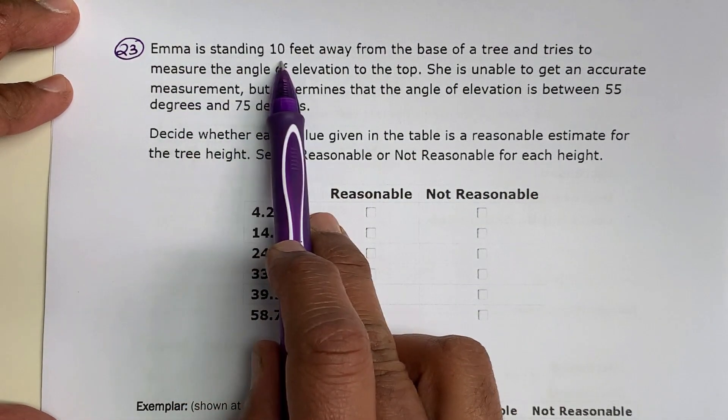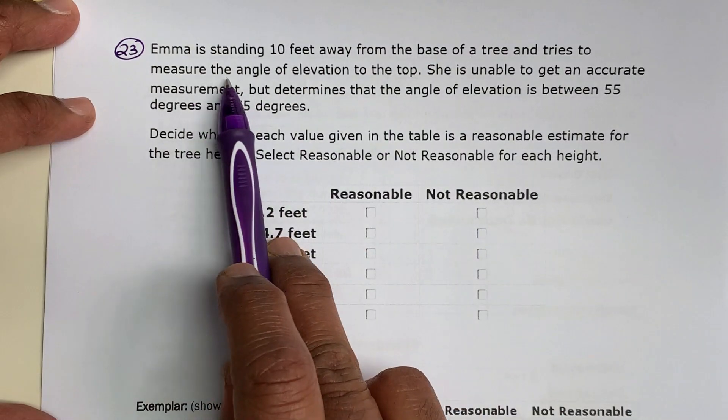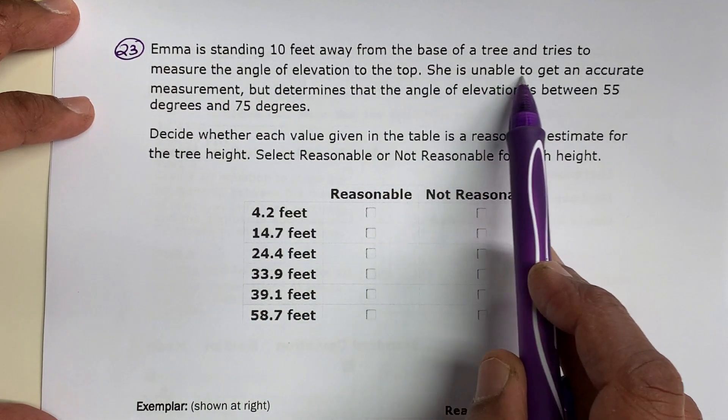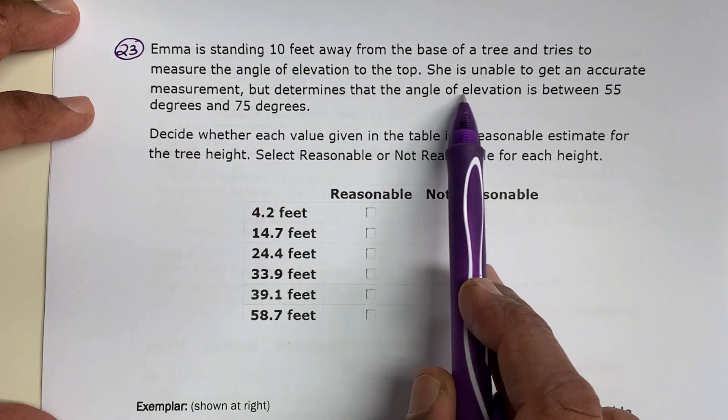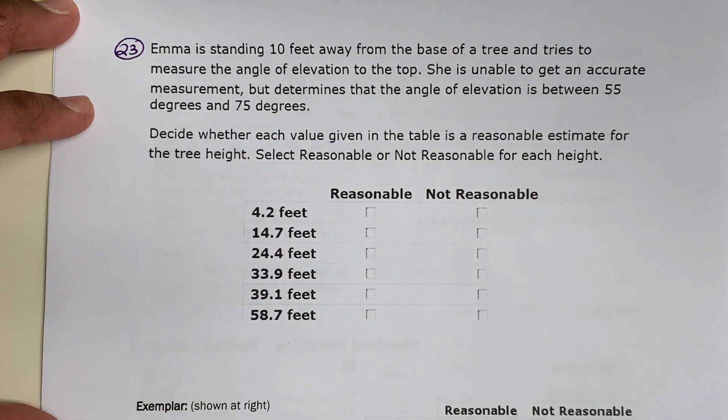It says Emma is standing 10 feet away from the base of a tree and tries to measure the angle of elevation to the top. She's unable to get an accurate measurement but determines that the angle of elevation is between 55 degrees and 75 degrees.